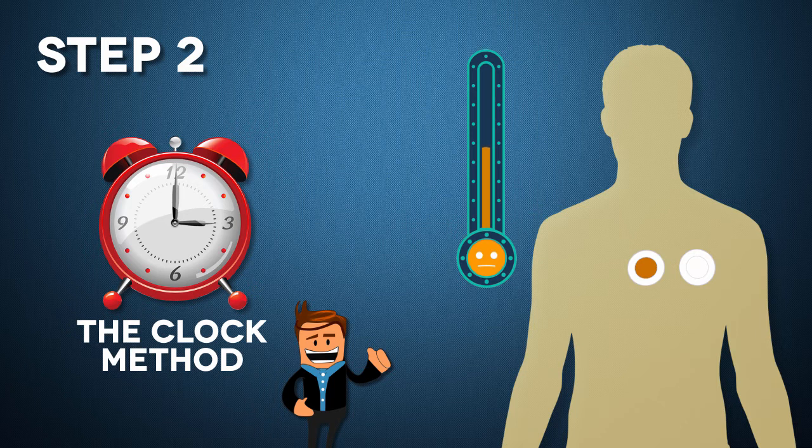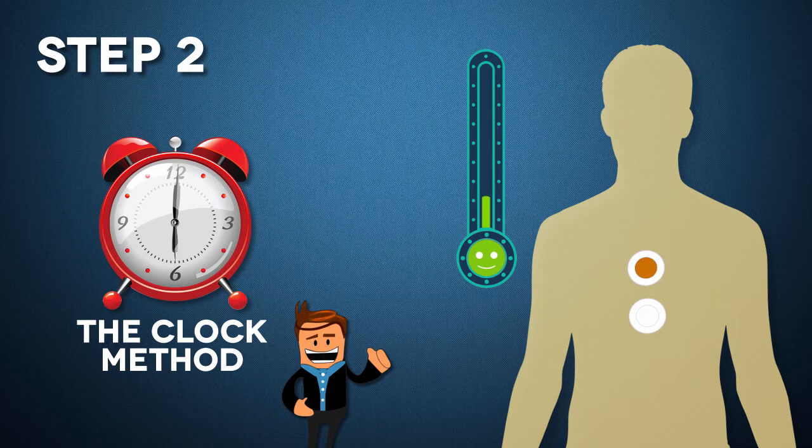And now we're going to go to the six o'clock position, and that's putting the white patch just below the tan one. Has there been any change?